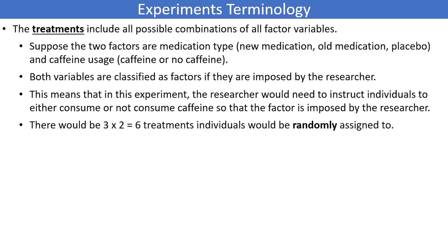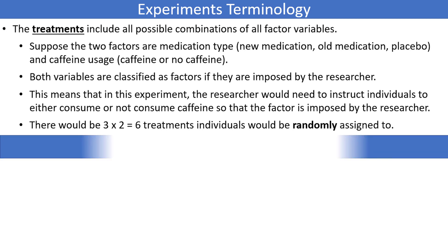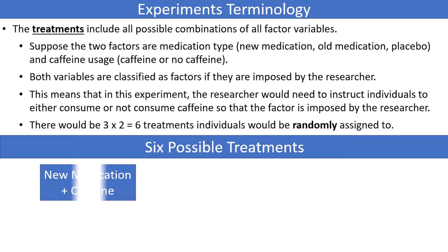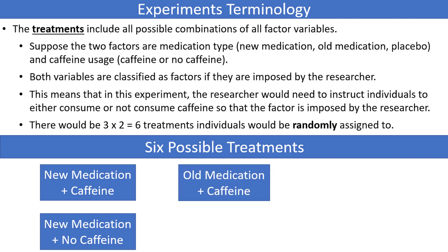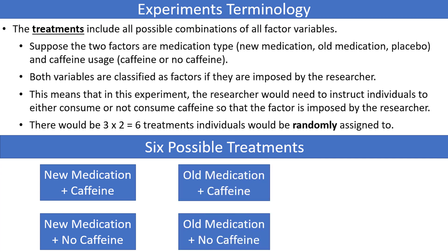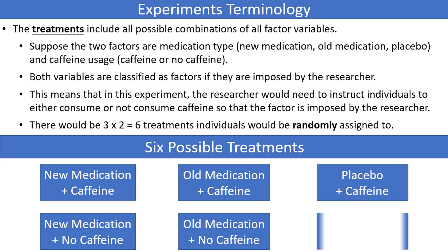In this example, there would be 3 times 2 equals 6 treatments that individuals in the study would be randomly assigned to. There are 3 levels of medication and 2 levels of caffeine usage. The 6 possible treatments are: new medication with caffeine, new medication without caffeine, old medication with caffeine, old medication without caffeine, placebo with caffeine, and placebo without caffeine. The response variable would be observed for all 6 groups to determine which one has the best results.